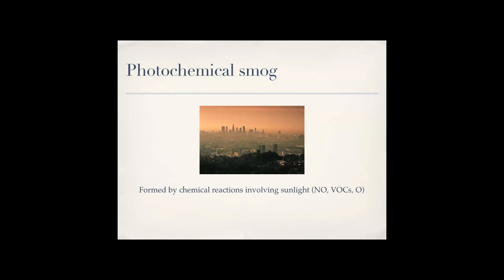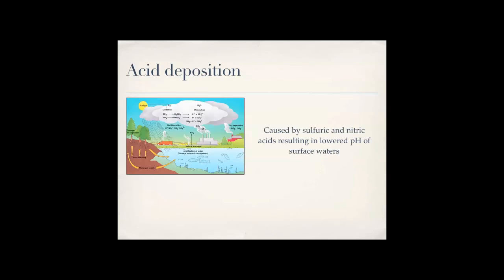So photochemical smog is formed by chemical reactions involving sunlight, such as nitrous oxide, VOCs, and oxygen. Acid deposition is caused by sulfuric and nitric acid, resulting in lowered pH of surface waters. So if there's a place with a lot of acid deposition, fish generally like a natural pH, which is around 7, but if that goes down, that causes not only fish, but other aquatic life and plants to die. So acid deposition is never good. And remember, sulfuric and nitric acids in the air from some non-point sources in the air can create acid deposition.